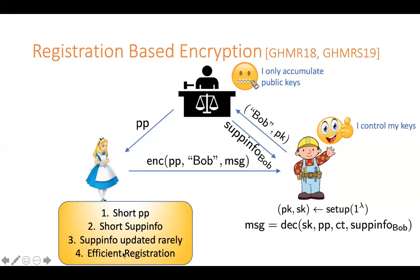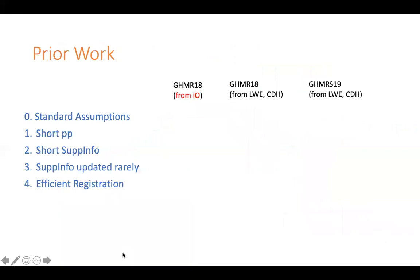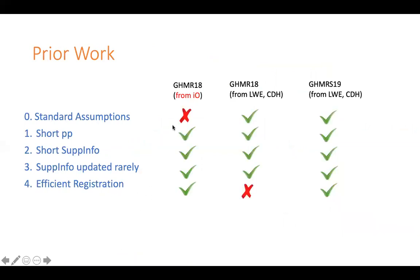And finally the registration algorithm also has to be efficient. Coming to what was known before: the original Garg et al. paper that introduced this notion gave a construction from IO that satisfies all the requirements, though that construction is from non-standard assumptions. The same paper also gave a construction from standard assumptions, but in that construction the authority takes a long time to register Bob's public key. Later in a follow-up work, they give a construction from standard assumptions that satisfies all the requirements. So it seems like the problem is pretty much solved, right? Well, let's see if it's entirely solved.